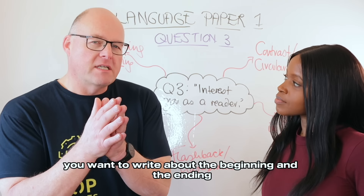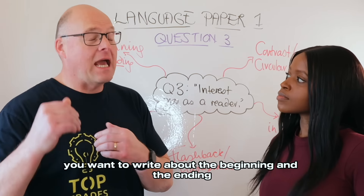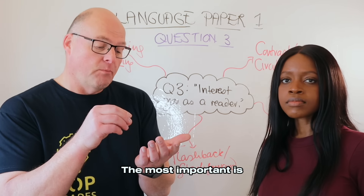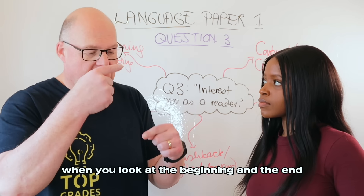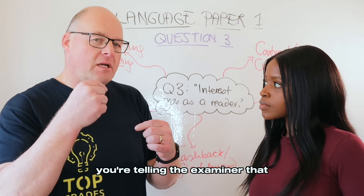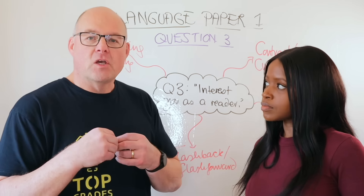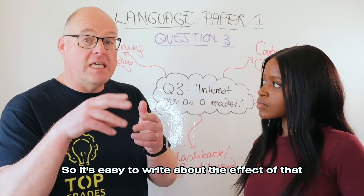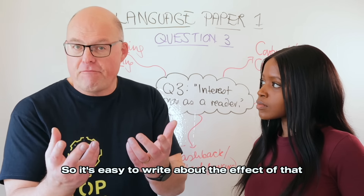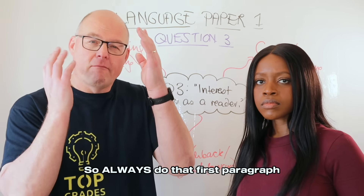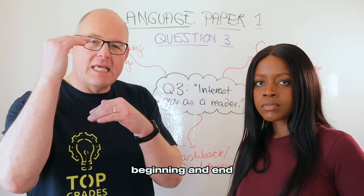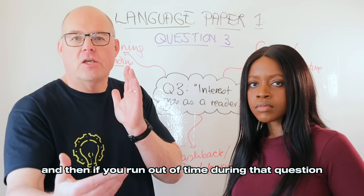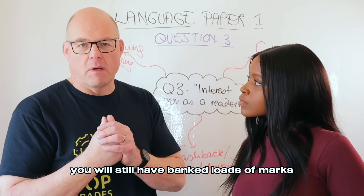In your first paragraph, you want to write about the beginning and the ending. The most important reason is that when you look at the beginning to the end, you're telling the examiner that you're looking at the whole text. You'll also notice a change by the end compared to the beginning, so it's easy to write about the effect of that. Always do that first paragraph — beginning and end — and then if you run out of time during that question, you will still have banked loads of marks.